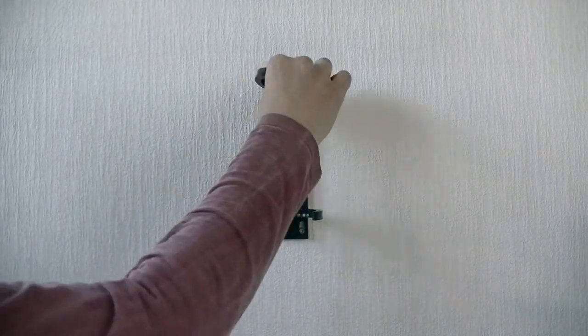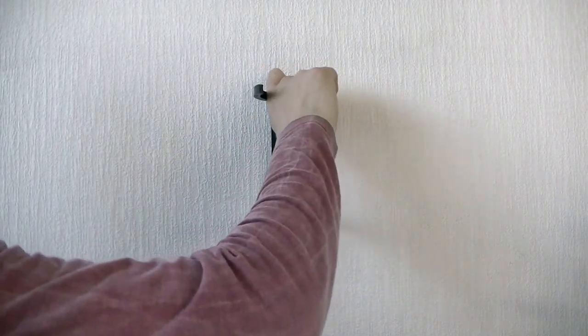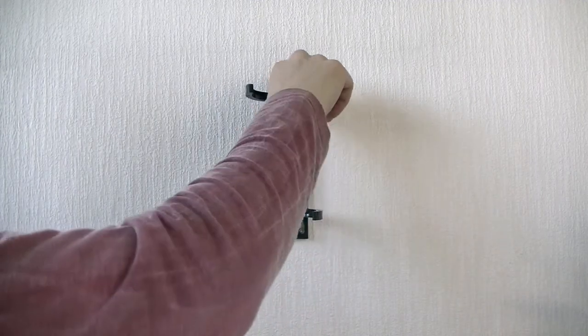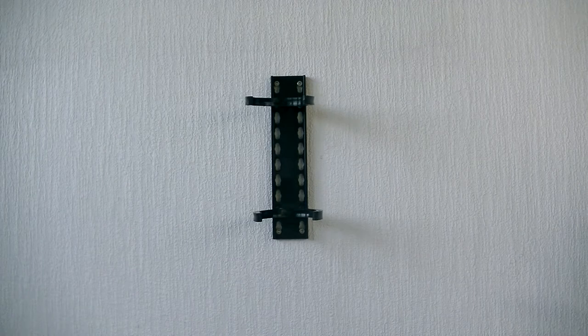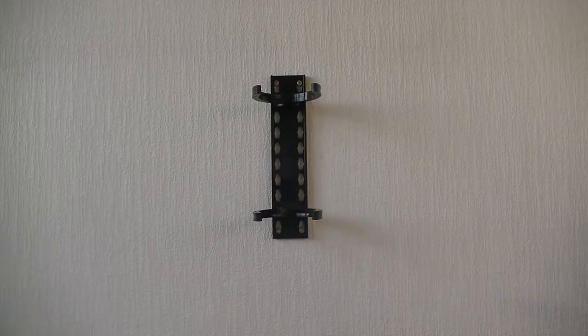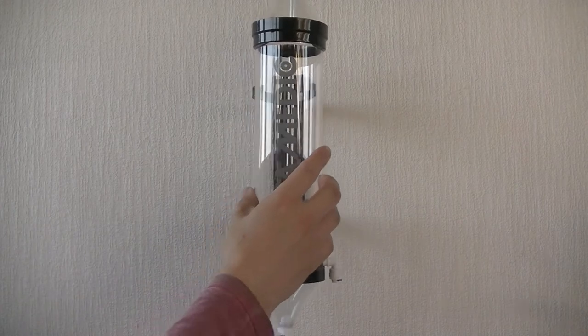Next thing you do is place these brackets in the mounting. You need to push them in really good or else they would fall out. So after those are installed you can just hang on the cultivation unit.